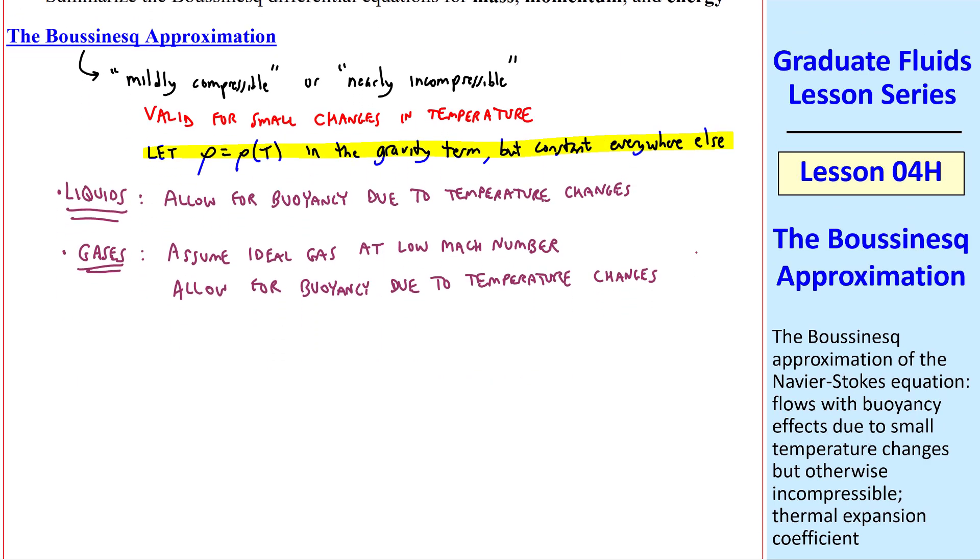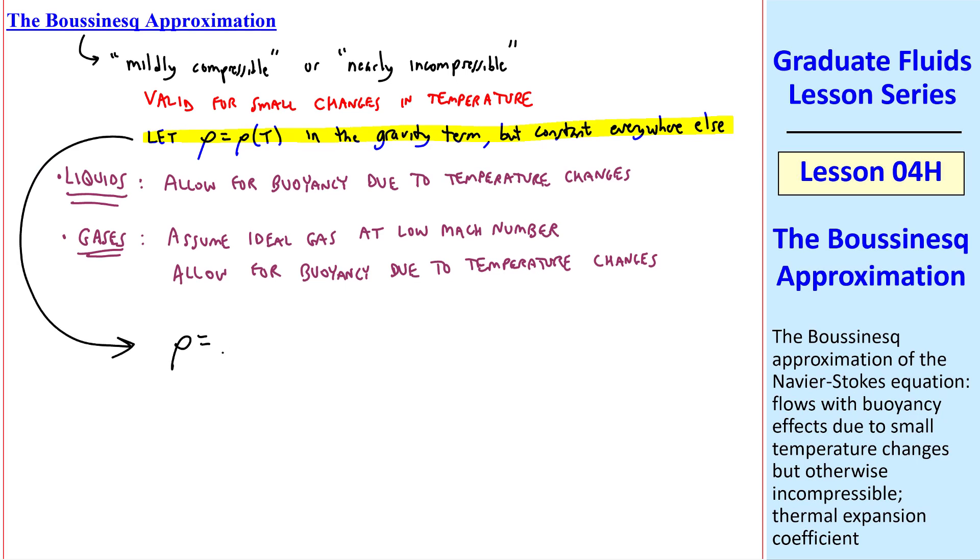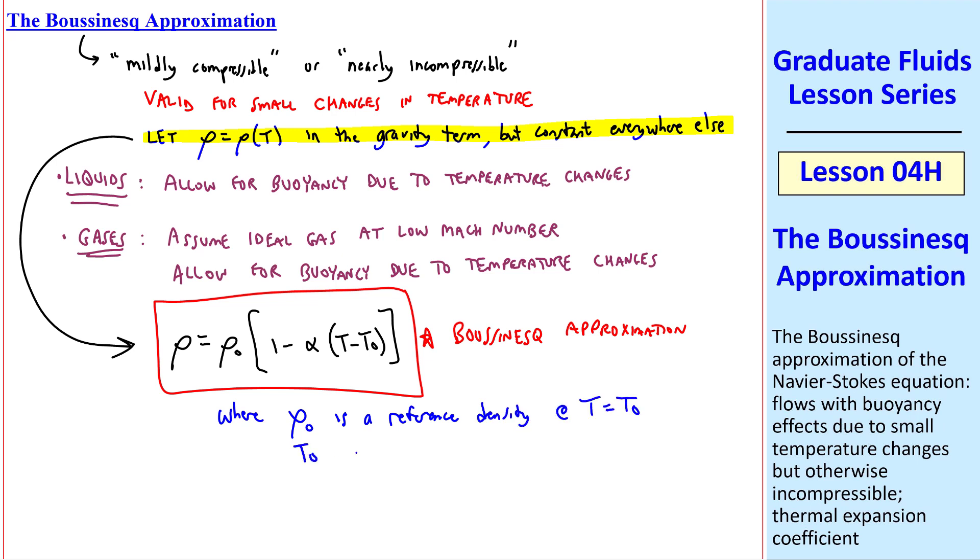Mathematically, in either case, we write rho equals rho naught times 1 minus alpha times T minus T naught. This is the Boussinesq Approximation, where rho naught is a reference density at T equals T naught, where T naught is a reference temperature. T naught can be some temperature in the flow, such as at a wall, or it can be the average temperature in the flow. But in all these cases, T minus T naught, which we'll call delta T, must be small.